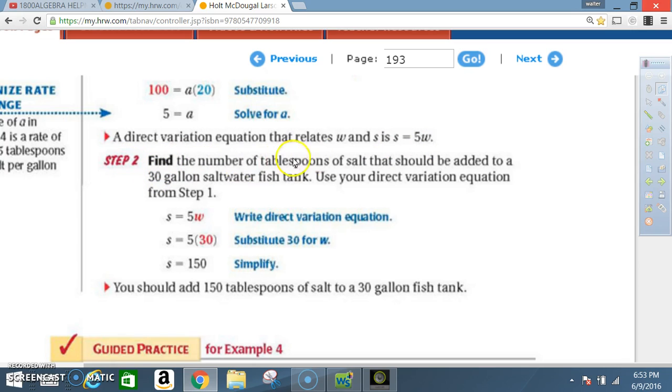Step 2. Find the number of tablespoons of salt that should be added to a 30-gallon saltwater fish tank. Use your direct variation equation from step 1. Write direct variation equation from step 1. S equals 5 times W. Substitute 30 for W. So, in place of W, you put 30. So, now you have S equals 5 times 30. So, what's 5 times 30? 150. You should add 150 tablespoons of salt to a 30-gallon fish tank.